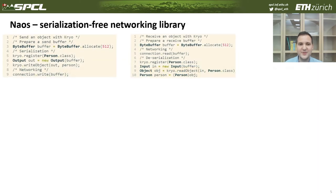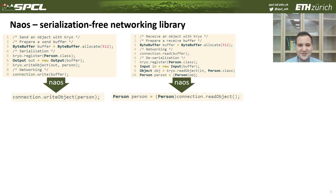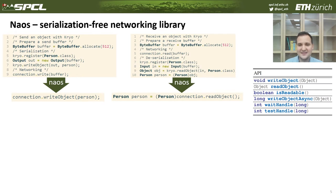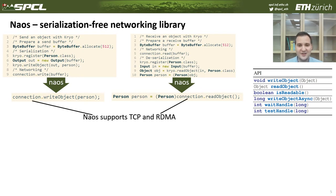For this reason, we implemented NAOS, our serialization-free networking library. What it essentially does is empower applications to send objects directly without the need to use serialization libraries. It adds the following interface to the network connection. A connection can be a TCP connection or an RDMA connection, which is a wrapper over InfiniBand IB verbs.